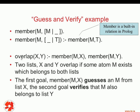Now let's assume we have a relation called overlap. Overlap(X, Y) is true if member(M, X) is true and member(M, Y) is true. So two lists X and Y overlap if some atom M exists which belongs to both lists. Notice we have an M variable in the first member subquery and the same M variable in the second member subquery. So we're asking: does there exist an M which is a member of X and that same M is also a member of Y? If that is true, then we deduce there is an overlap between X and Y.